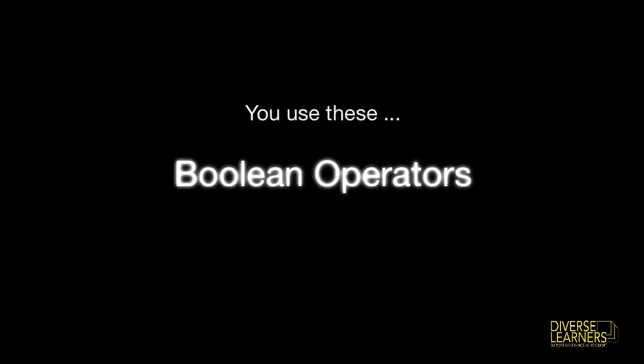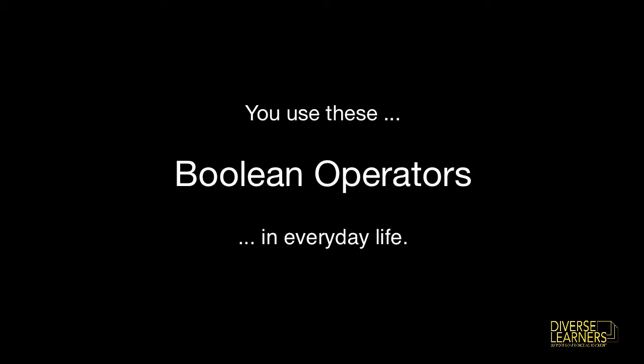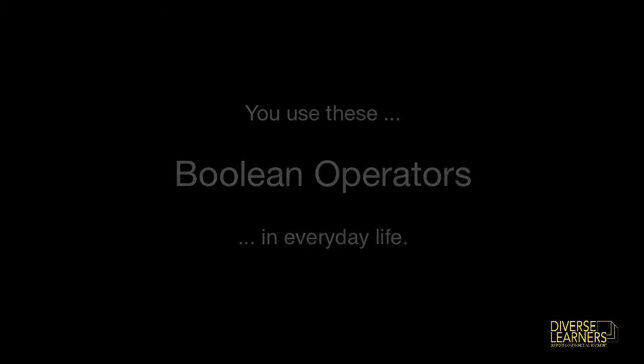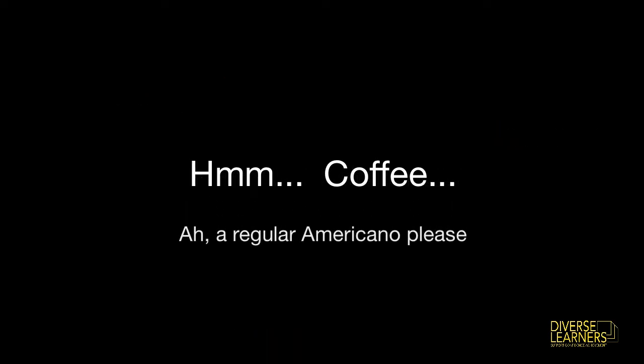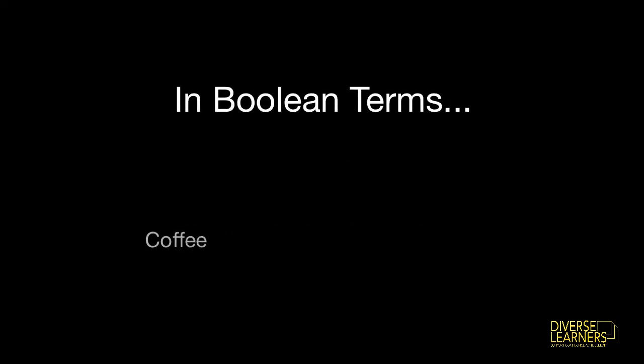You use these Boolean operators in everyday life without really thinking about it. When you order a coffee at your local coffee shop, you'll likely ask for your favourite coffee but then you'll make choices about how it's served. You might ask for a coffee with milk but no sugar. In Boolean terms, this is coffee AND milk, NOT sugar.